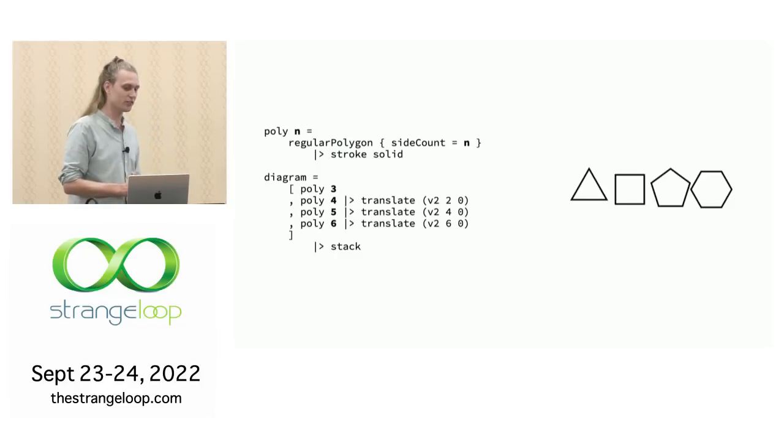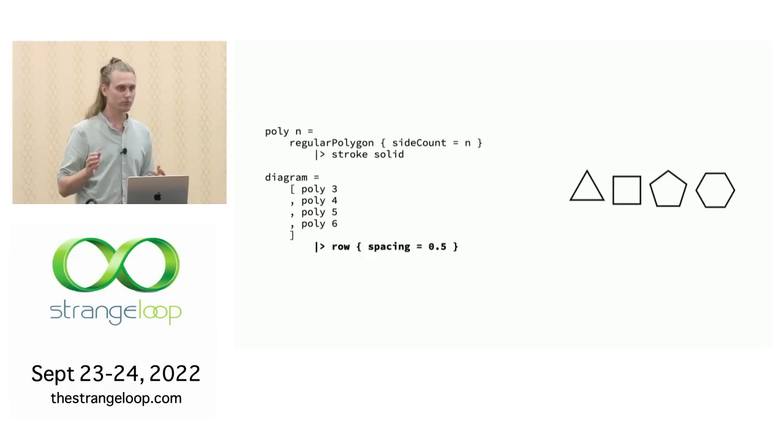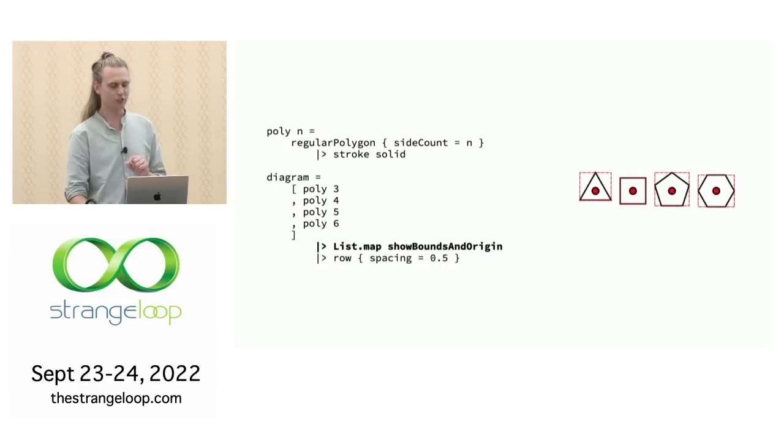We can also see that there's a pattern in the translations where I'm translating by zero, then two, four, six. So you might be tempted to put that in the function too, but I have a better way. Instead of stacking these objects, we can use the function row and give the list to the row function with a certain spacing. And now we don't even have to worry about the translation. It'll just put the geometric shapes in a row. How does this work? We can turn on a debug command by mapping the function show bounds and origin over these. So now you can see the bounding box for each object and the alignment point of each of them.